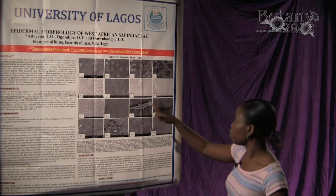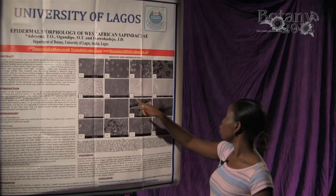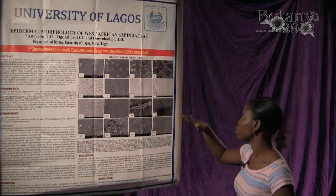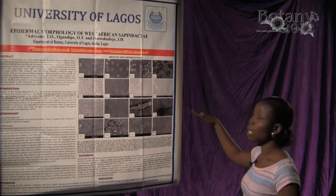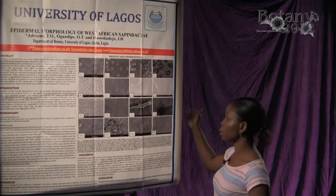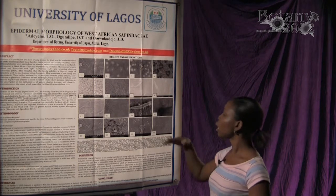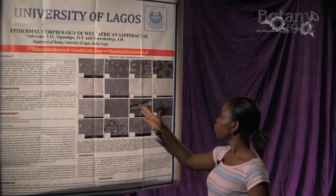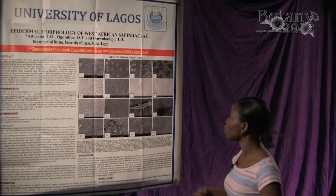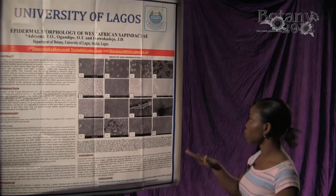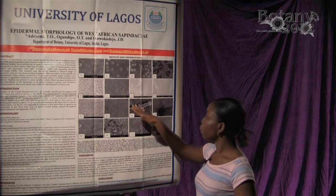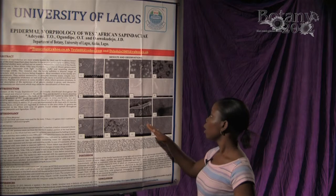My results show that figures 1 to 4 show different types of stomata and their patterns found across Sapindaceae. Figures 5 to 8 show the stomata being covered by papillae, which are structures found on the surface of the leaf.